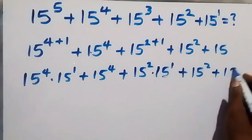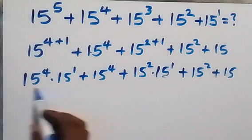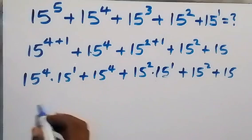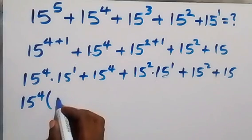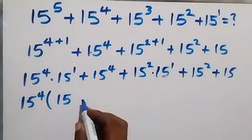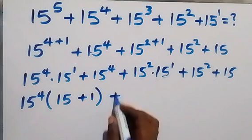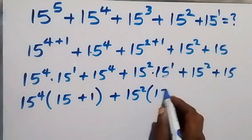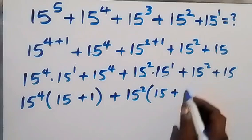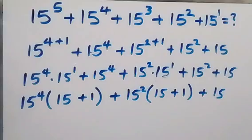From there, let's factor what is common from these two terms. We have 15 raised to power 4 as common, then what is left is 15 raised to power 1, which is 15, then plus 1. What is common there is 15 squared — take it out — then we have 15, then plus 1 left here, then plus 15.